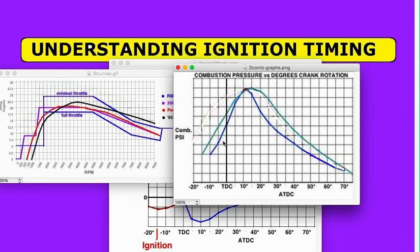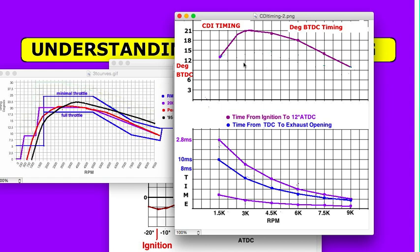These are also two compression graphs. I think the skinnier one would be more typical of a race engine. So this is pretty much the same as this red graph out here. And this right here is its time chart from ignition to 12 degrees after top dead center. That being the target for the peak combustion pressure.